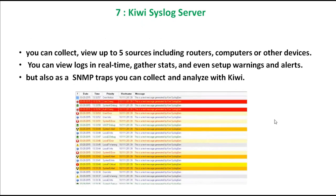One of my favorites is called Kiwi Syslog Server — or simply Kiwi. You can collect and view logs from up to five sources including routers, computers, or other devices. You can view logs in real time, gather status, set up warnings and alerts, and also analyze SNMP traps with Kiwi. If something happens on your router, switch, or server, it gives you a cool notification that something bad has happened.